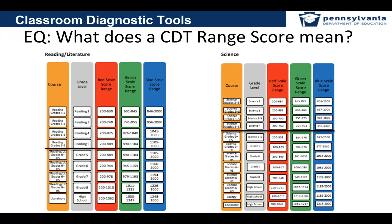A quick glance at what is contained in the chart: the yellow-orange column is the course name, the gray is for the grade level, then we have red scaled scores, green scaled scores, and blue scaled scores.